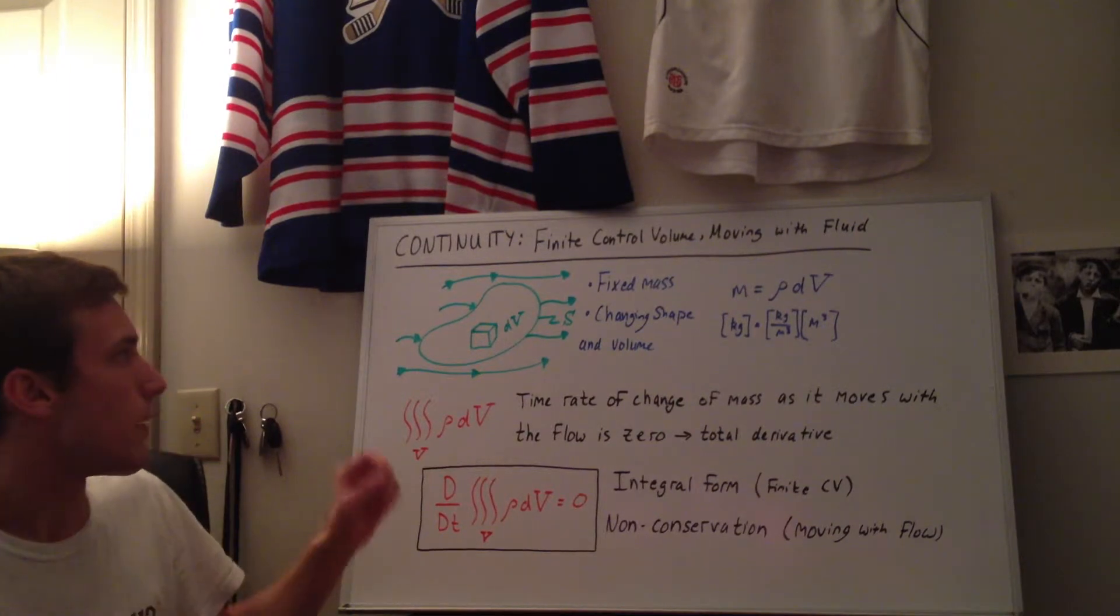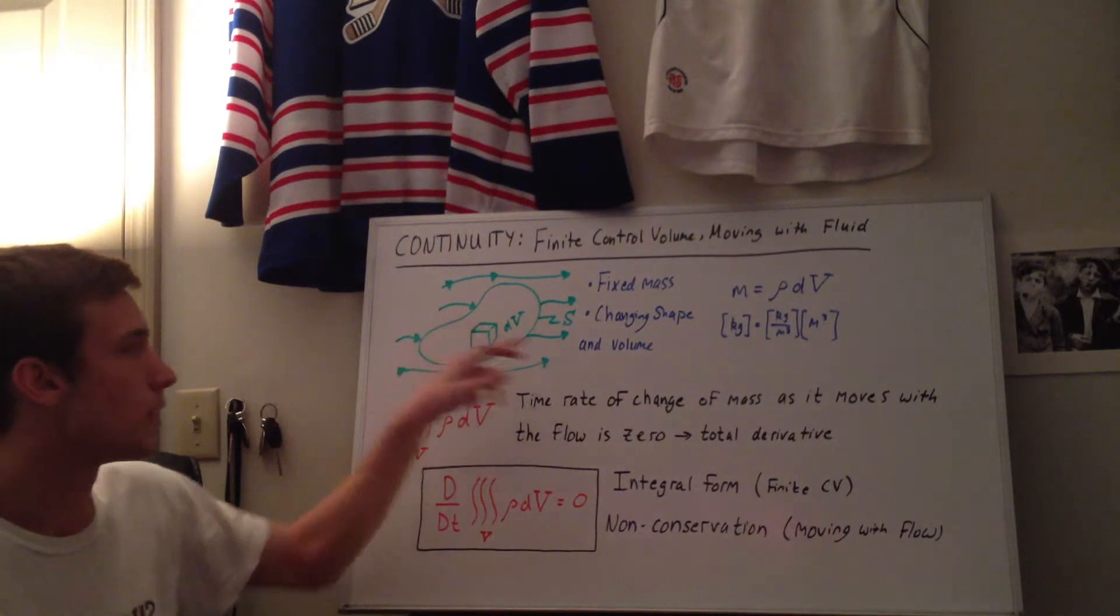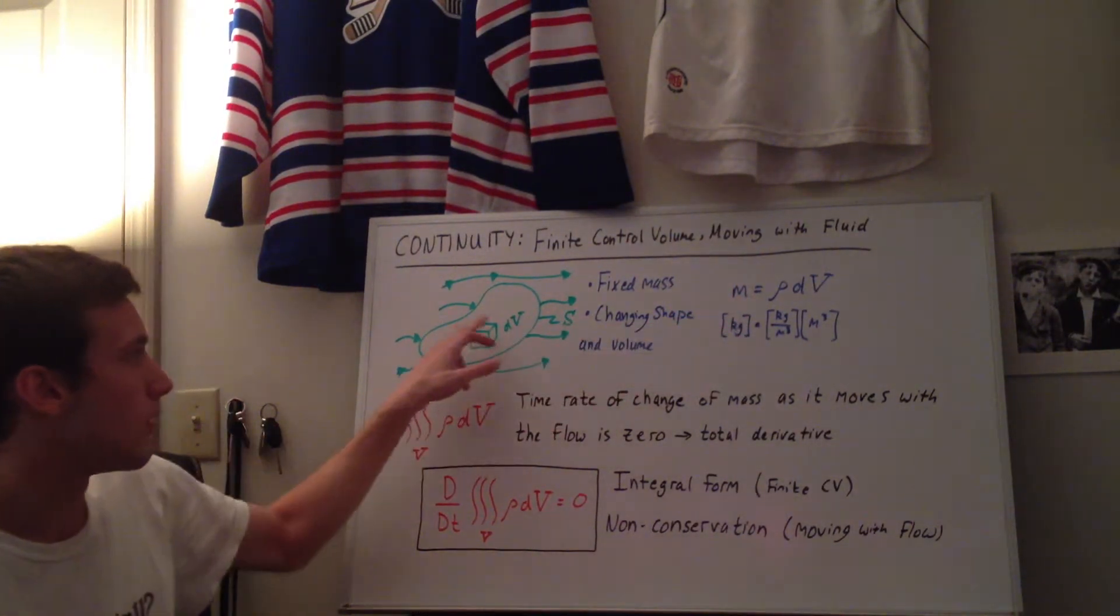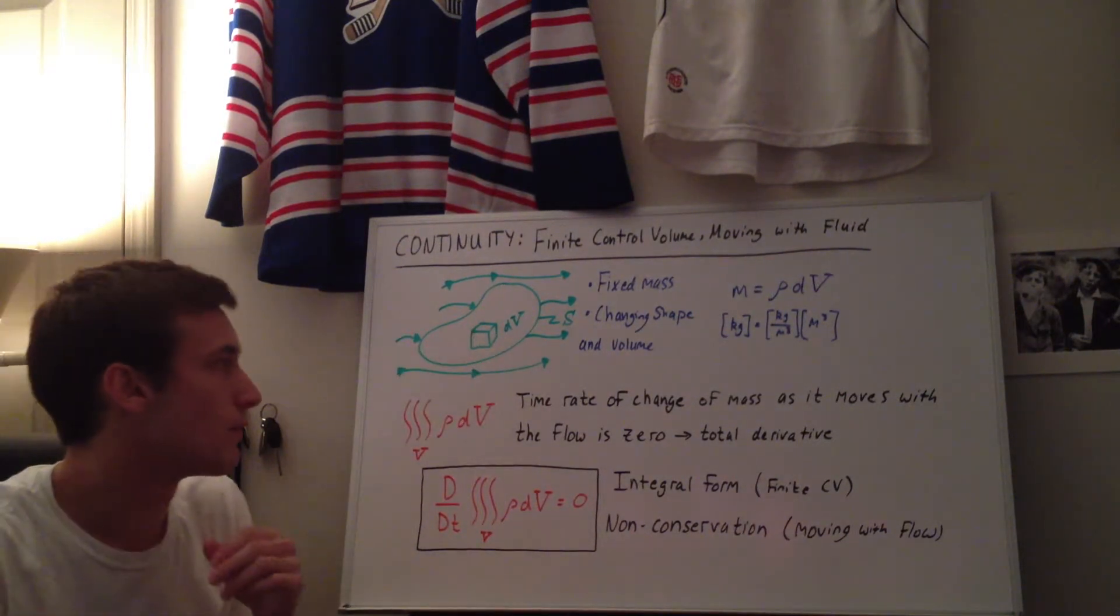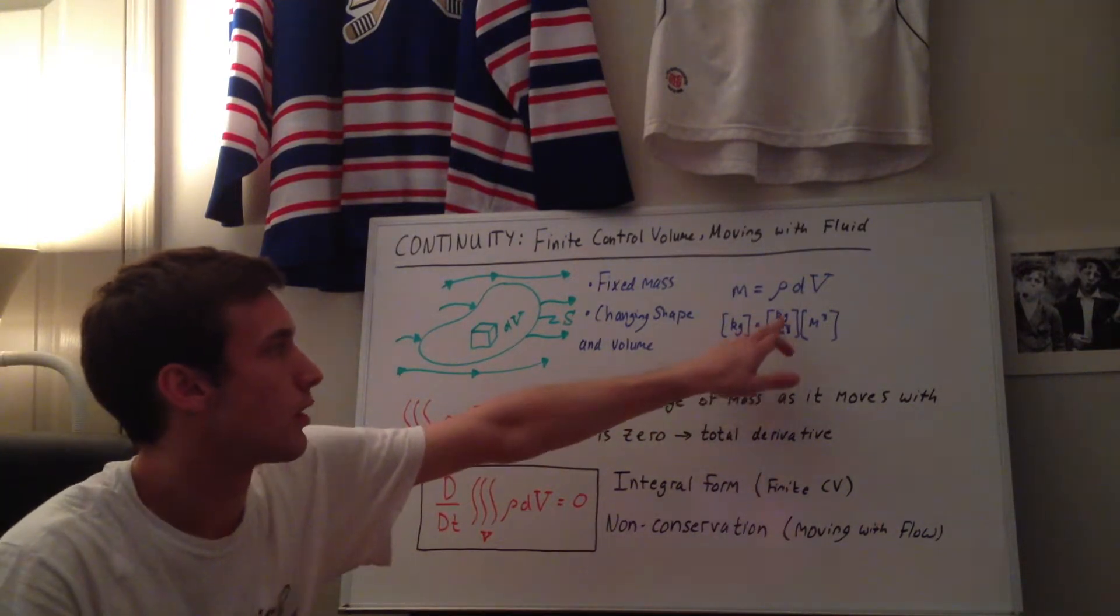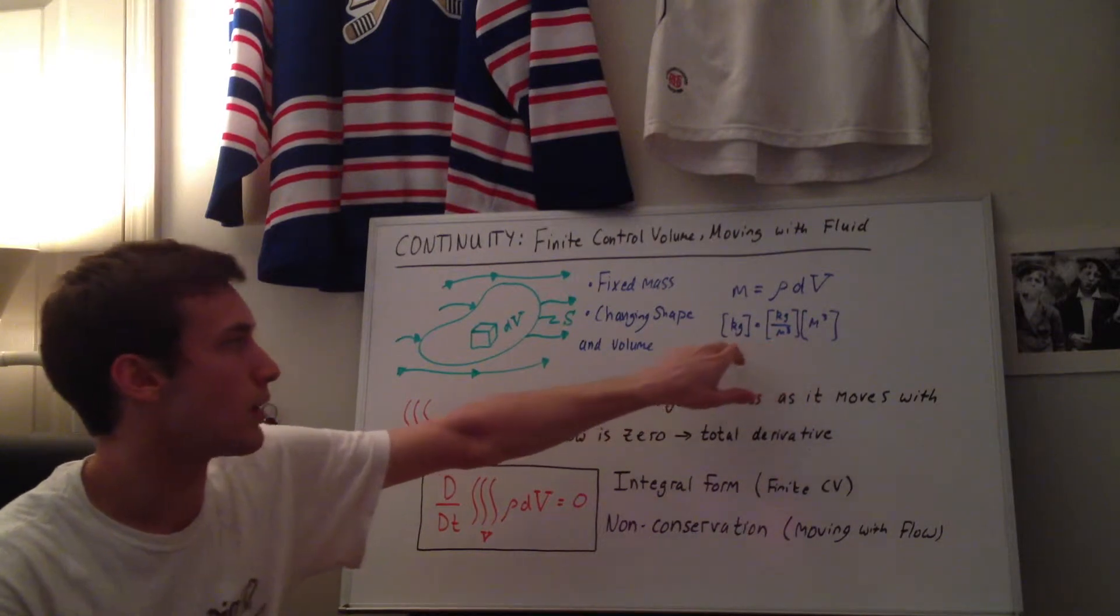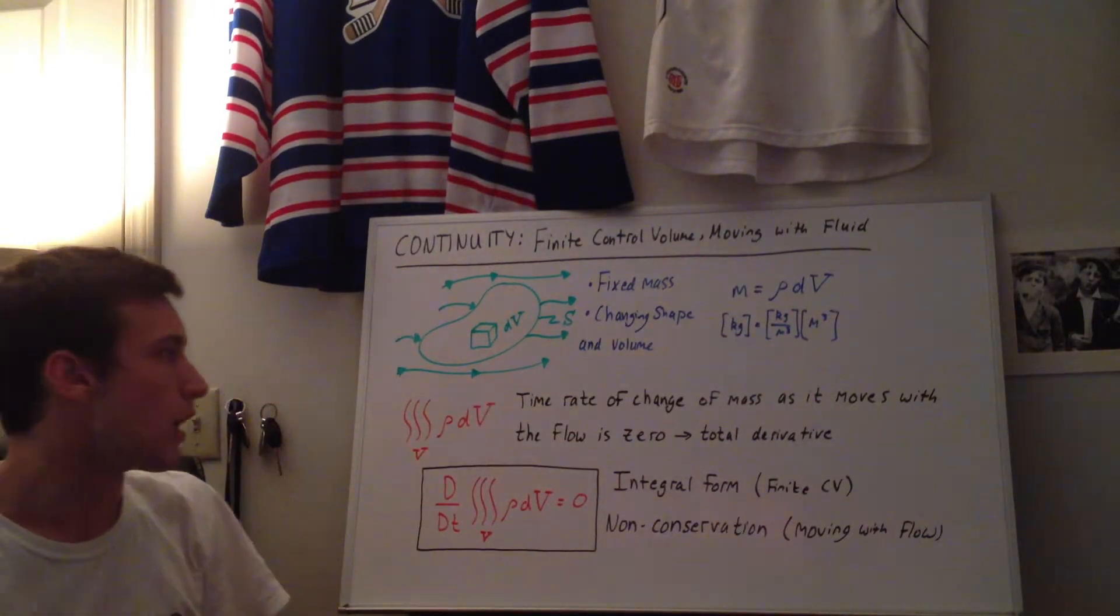So the mass of this little finite element or finite fluid element inside the control volume is rho times the volume, so the density in here times the volume of the fluid element. And again, the units check out, so we have kilograms per meter cubed for the density, meter cubed for the volume, meters cubed canceled out, and we get kilograms for the mass.